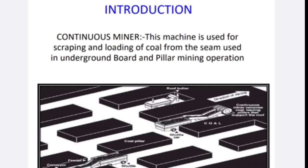A continuous miner is a machine used in underground coal mining for cutting and loading operations. It is generally used in the bord-and-pillar method, conducted for two main reasons: first, to develop the pillars and panels, and second, to develop multiple entries for access to the coal reserve, supported in the long term by the pillars subsequently formed.